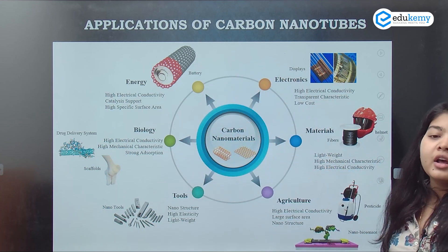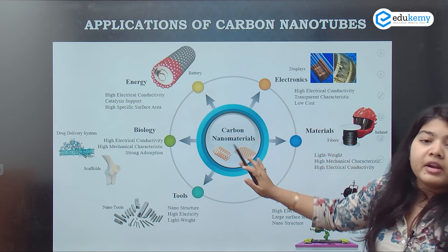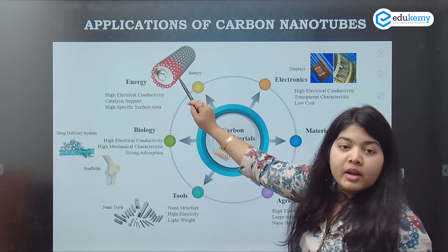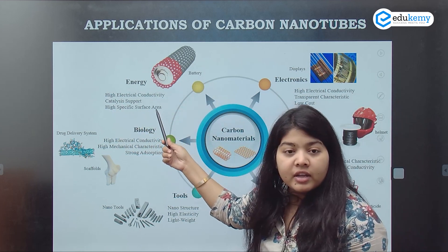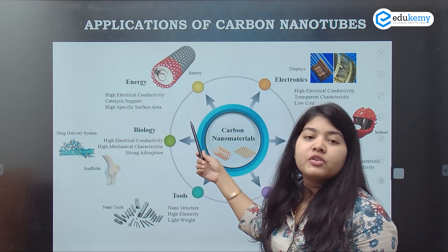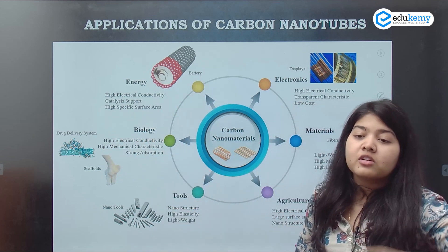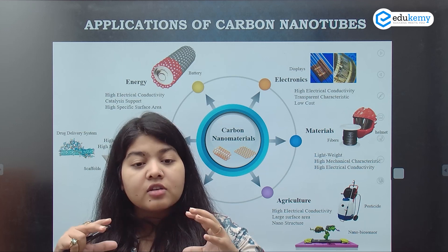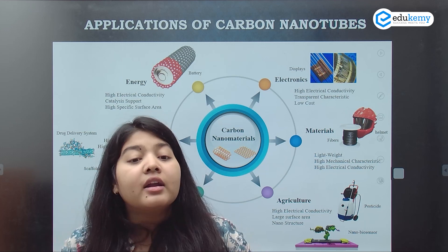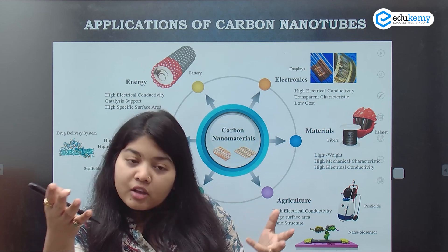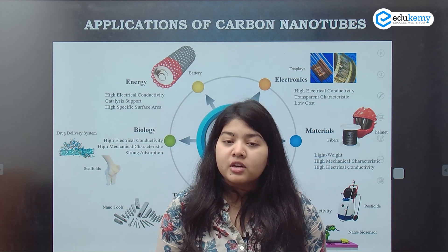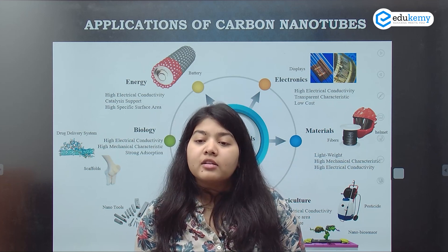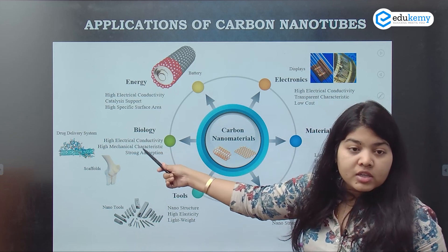To summarize the different areas: carbon nano materials can be used in energy — for example, in the creation of batteries — because of their high electrical conductivity, catalysis support, and high specific surface area. Each point of a single-walled carbon nanotube can conduct, making the overall effective area high and the cell much more efficient.